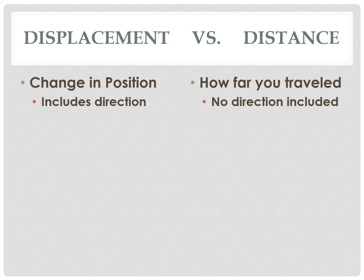These two terms, displacement and distance, are oftentimes used interchangeably; however, they are quite different. Displacement is referred to as a vector and distance is a scalar. Displacement is found by change in position, which does include the direction — it includes left or right. Distance, however, is just how far something travels. If it travels to the left and then travels to the right, it's both of those included together.